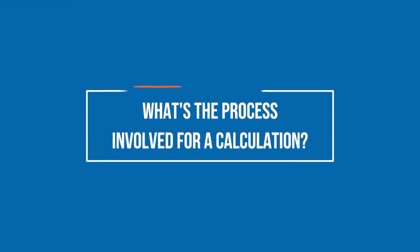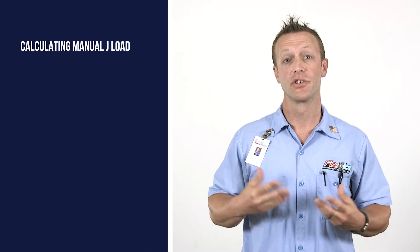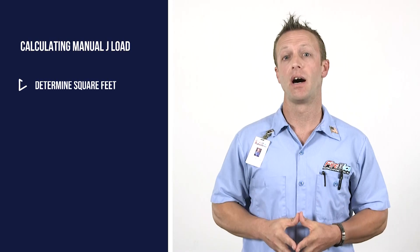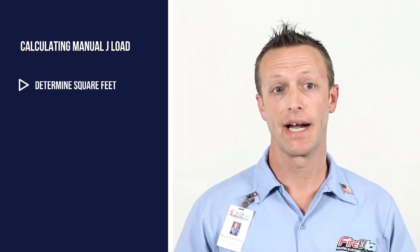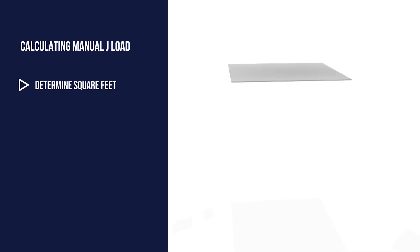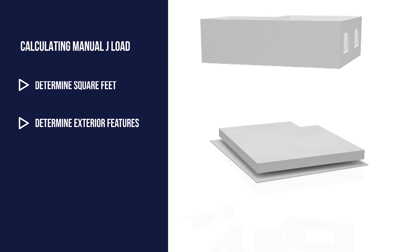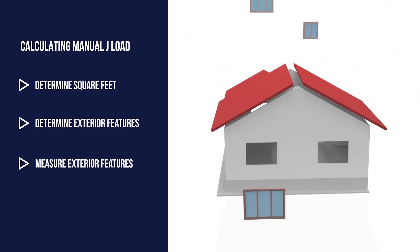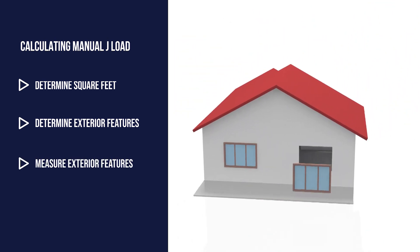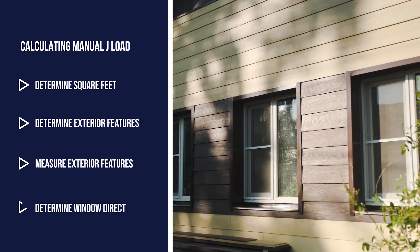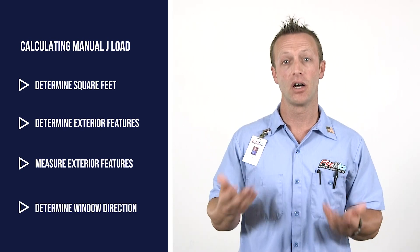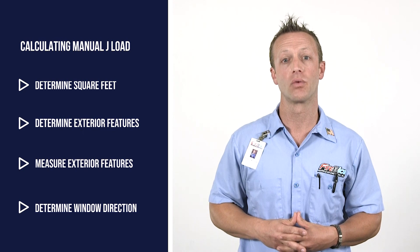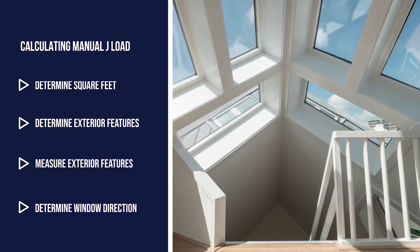What's the process involved? The first thing we do is determine the amount of square footage, usually based on government factors with the auditor site. We'll also determine the amount of exterior features, which is mostly walls, ceilings, and roofs. We would also go out and measure the windows and doors of your home, and make sure we are looking in the right direction based on how much sunlight will be a factor in your home.